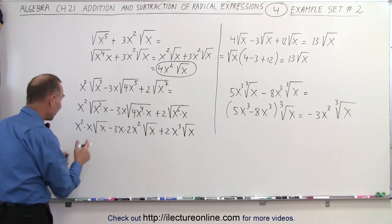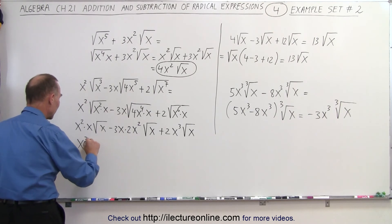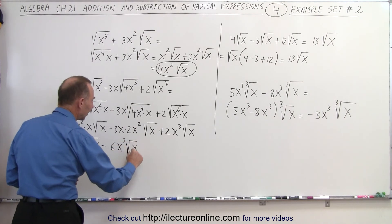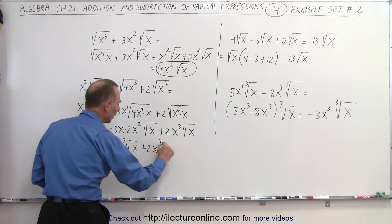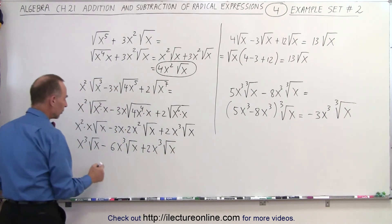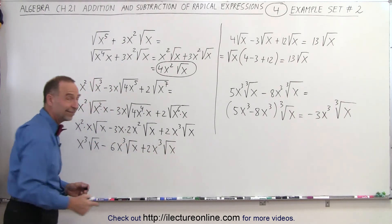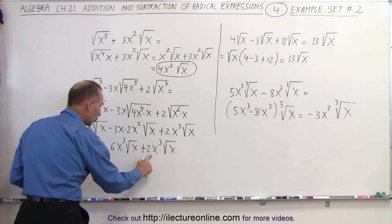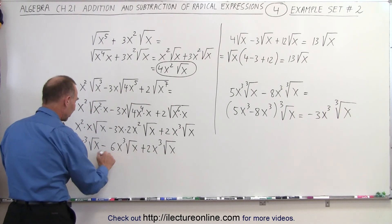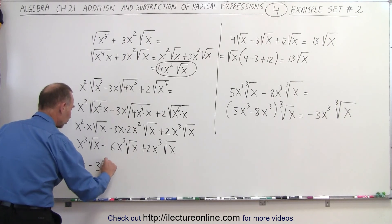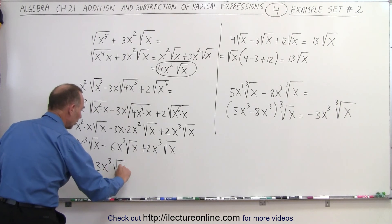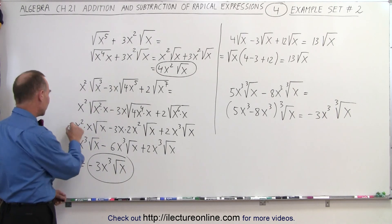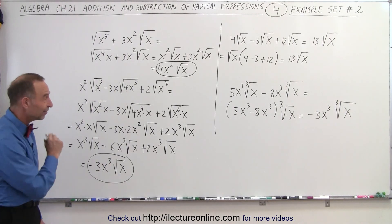All we have to do now is simplify. This gives us x cubed times the square root of x, minus 6x cubed times the square root of x, plus 2x cubed times the square root of x. Now you can clearly see that all the radicals are exactly the same, so we can add and subtract them: x cubed minus 6x cubed plus 2x cubed — 1 plus 2 is 3, minus 6 equals minus 3x cubed times the square root of x. And that's the final simplified form. And that is how it's done.